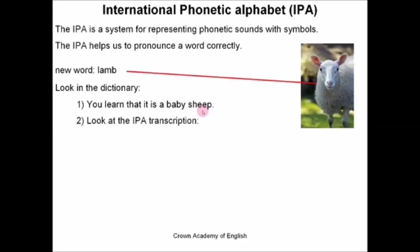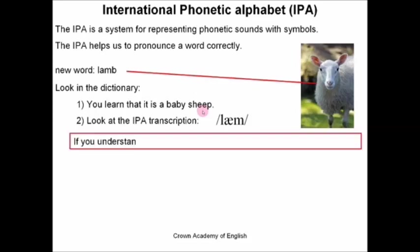Then in the dictionary, we look at the IPA transcription. Here it is. So this will tell us how to pronounce the word. And if we understand these symbols, then we will know the correct pronunciation of every word. So let's carry on with the example.